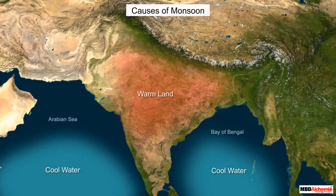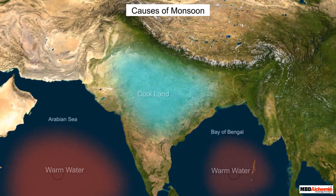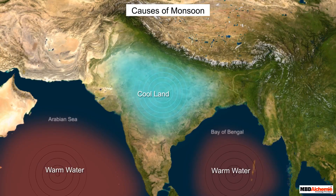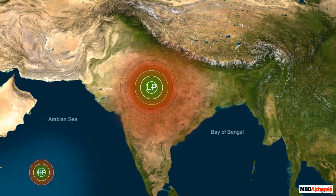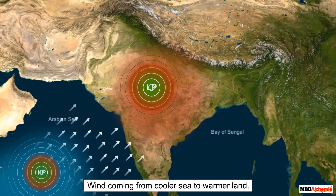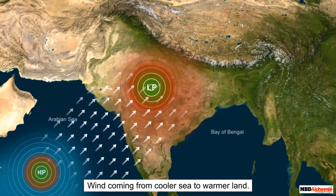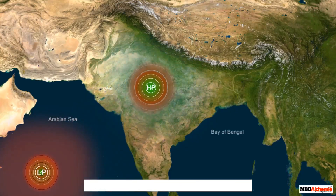Let us discuss the causes of this seasonal reversal of wind from sea to land and land to sea. The main cause is the differential heating and cooling of land and its surrounding water bodies, i.e. seas and oceans. During summer, land is hotter and thus low pressure develops over interior parts of the large Indian landmass, while simultaneously high pressure develops over the surrounding seas and oceans.